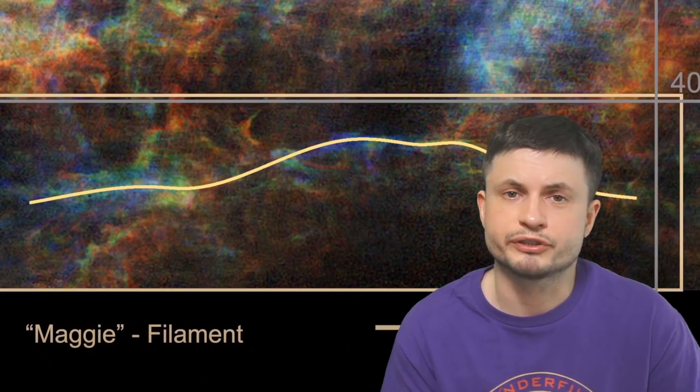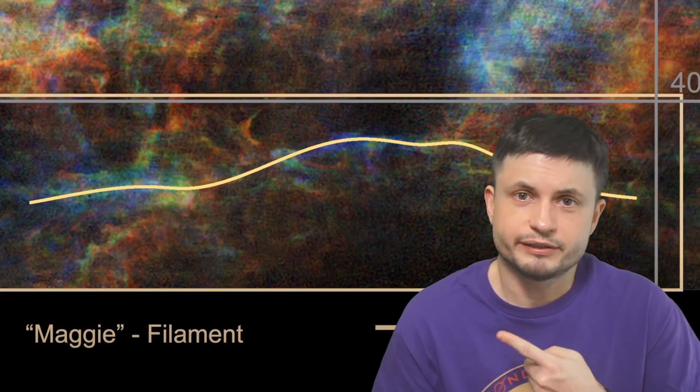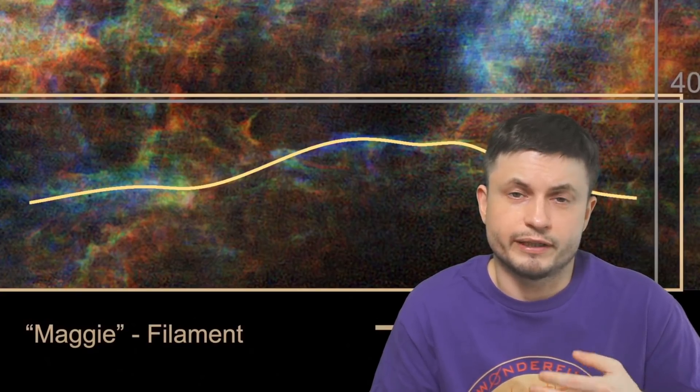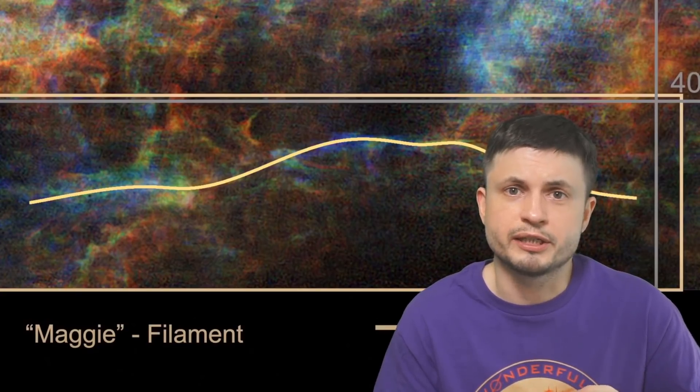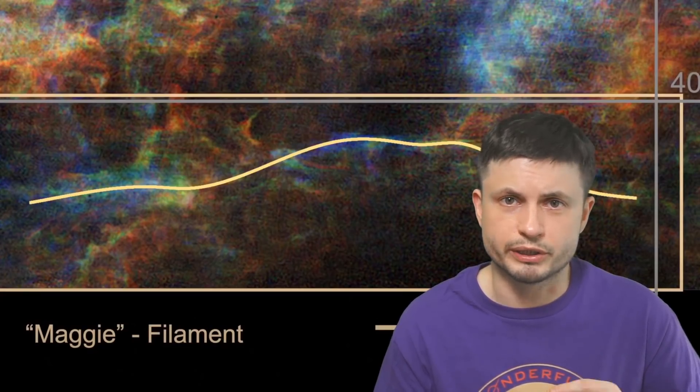But for astronomers studying the evolution of galaxies and evolution of stars, this is a big mystery. At the moment, nobody can actually explain how such a long filament of atomic and not-molecular hydrogen could be produced to begin with. And also how it got into this location where it is.